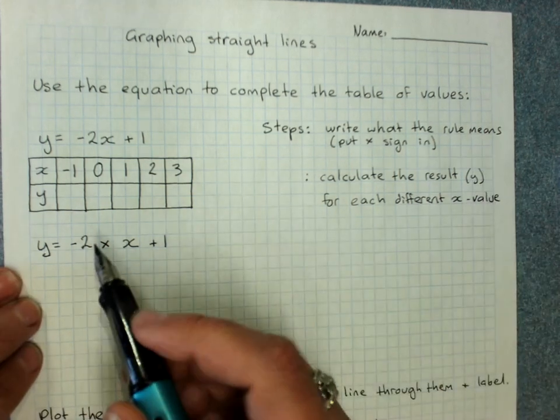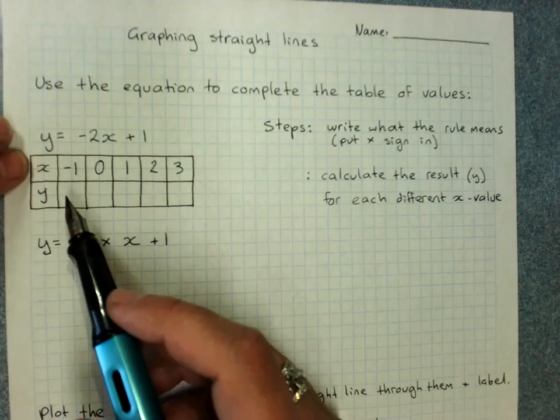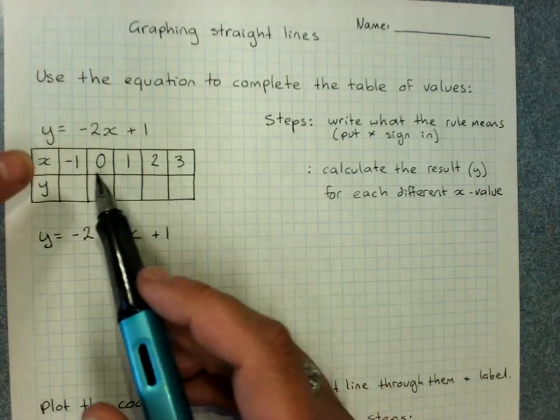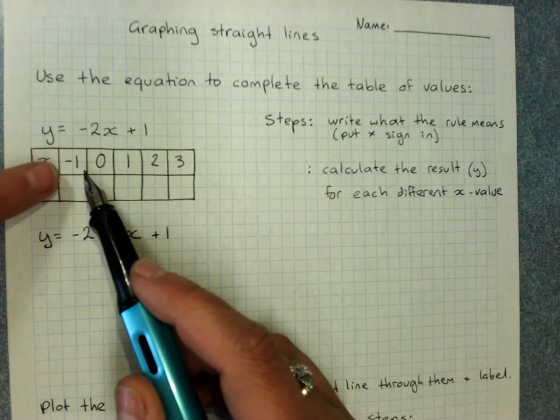We calculate the result which gives us y for each different x value. And it's okay to write it down. The table of values is like a what-if table. It says, what if x was negative 1?